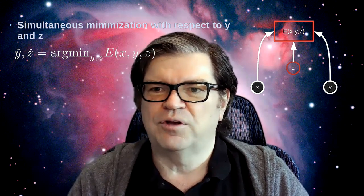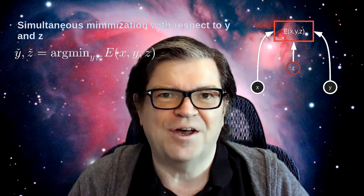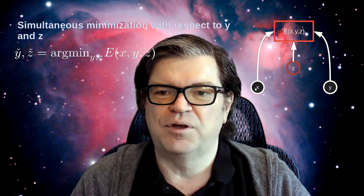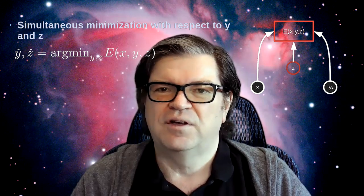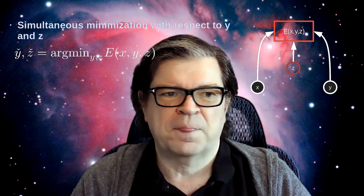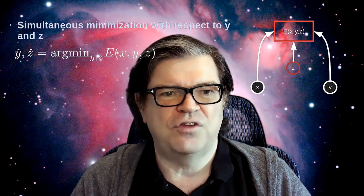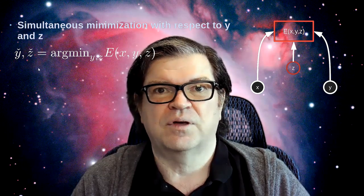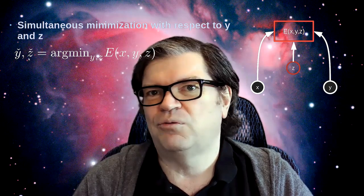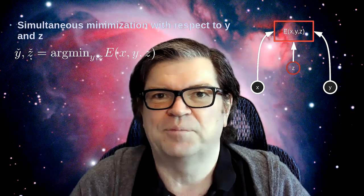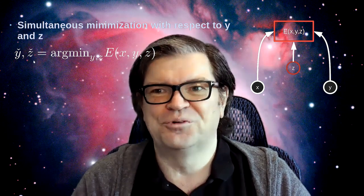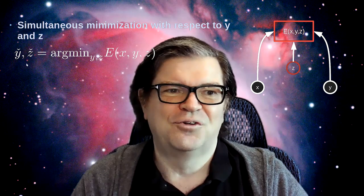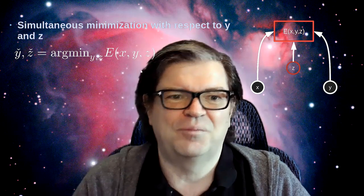Formally, we have an energy E of X, Y, and Z — all three variables: the input, the variable to be predicted, and the latent variable. Inference consists in minimizing this energy with respect to Y and Z simultaneously. You get simultaneously a good answer and the value of the latent variables, which you can discard because generally you don't care about them — they help you produce a good output, but you're not particularly interested in them in the end.